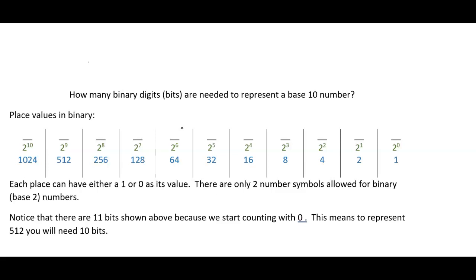In our number system, if I write the number 57820, we just assume this is a base-10 number because there's no subscript. The value of each digit is the value of the symbol times the value of the place. The place has a value of 10 to the zero, or one. That first place value on the right is always one — otherwise you'd have no way to express one.